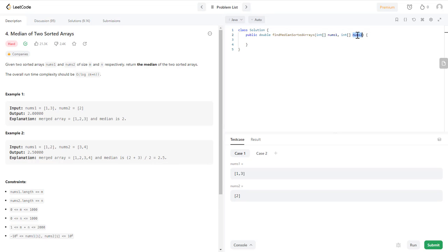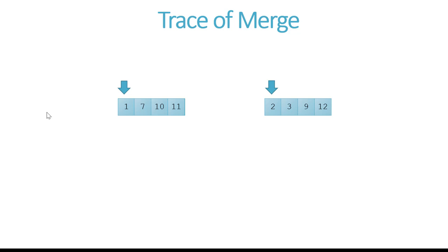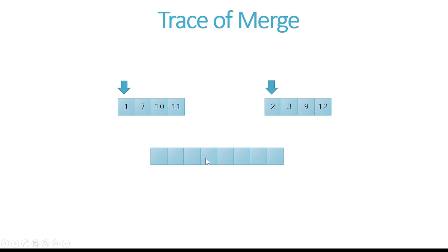Since nums1 and nums2 are integer arrays, when you calculate the average you need to make sure you are doing floating point division, not integer division. I'll use a simple merge algorithm, starting by looking at the first element of each array. I'll create a new array with a size equal to the number of elements in both arrays combined.